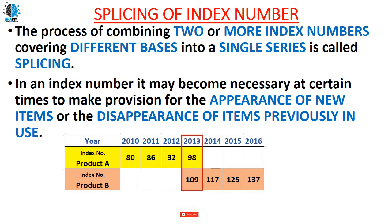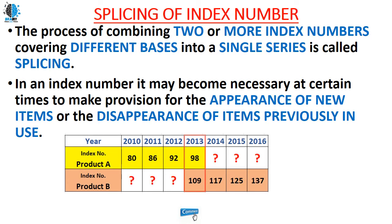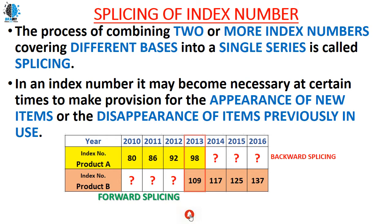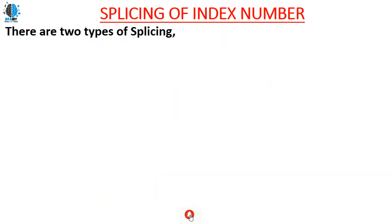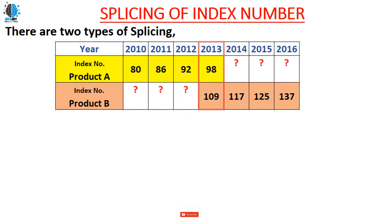In splicing, we need to find out: if product A still existed in the market till 2013, what would be the index numbers? And if product B had started in 2010, what would be its index numbers? If product B is extended back to start from 2010, that will be called forward splicing. If product A is extended forward to survive till 2016, that will be called backward splicing.